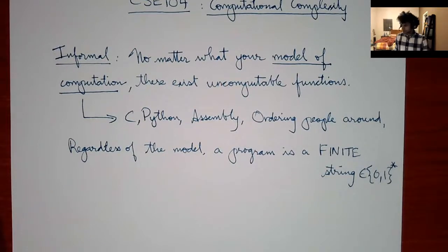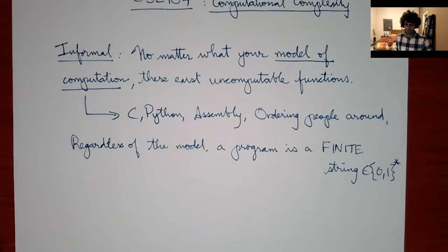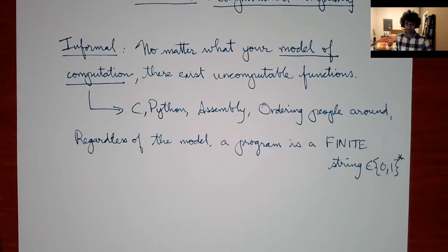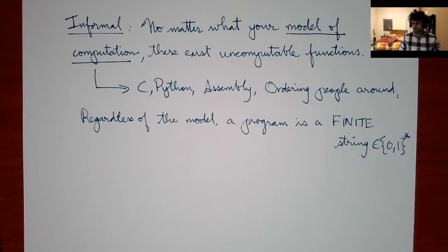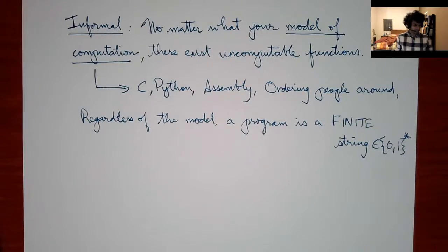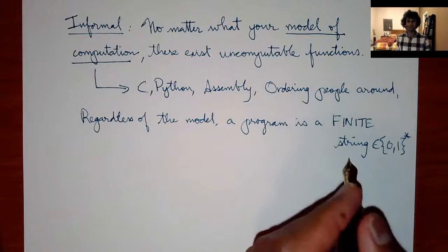A student recalls: there are countably infinite programs but uncountably many functions, which is why uncomputable functions must exist. Exactly — that is what I'm going to formalize here. The argument is called diagonalization. I'm going to present it in a slightly more general form, but that is correct. Regardless of the model, a program is a finite string.